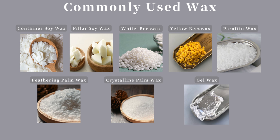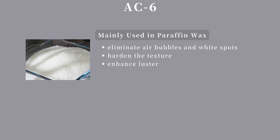These are the waxes commonly used in making handmade candles. In candle making, even with the right formula and correct operation, some undesirable flaws may still occur due to the nature of the wax. In such cases, additives are used to change or correct the nature of the wax. The first commonly used candle additive is AC6, a polyethylene wax. Its primary function is to increase the hardness of paraffin wax, enhance luster, and eliminate air bubbles and white spots. Without it, the surface of paraffin pillars would have more natural flaws.